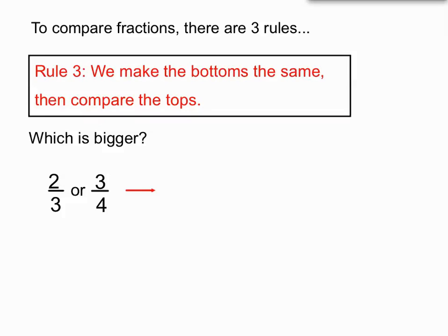How do we make the bottoms the same? We've got to pick a number that three can go into and four can go into. One way of finding such a number is to multiply those two numbers together. Three times four makes twelve. So because 3×4 makes 12, we know that three goes into twelve and four also goes into twelve. We're going to change both of these fractions into being over twelve instead.